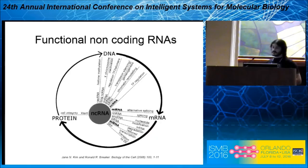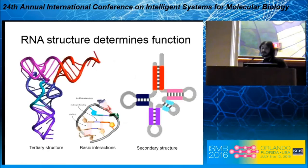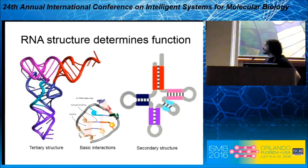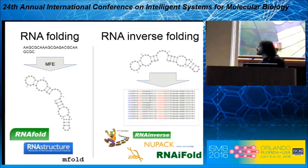Starting with the basics: it's widely known that there are many types of non-coding RNA covering a wide variety of processes, including transcript degradation, transcript localization, etc. Despite the importance of RNA-specific sequence motifs, the RNA structure of non-coding RNAs is primarily determined by function. The forces that determine RNA structure are base pair and stacking interactions.